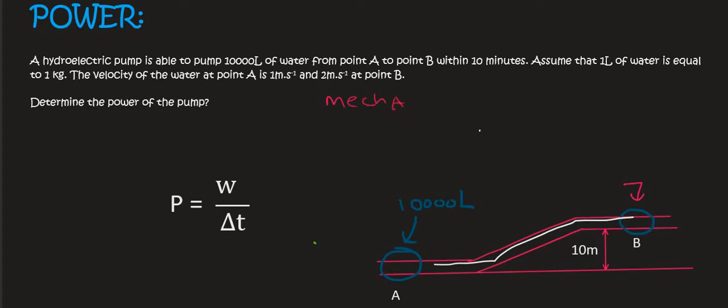So let's work out the mechanical energy at A, which is equal to the following. At A there is no height, and so the potential energy falls away, and so kinetic energy is a half mv squared. Now the mass they haven't given us, but they've told us that there's 10,000 liters and they said that assume that one liter of water is equal to one kilogram. Just a side note, that's actually a very accurate, it's almost perfect that assumption, because water has a density of one kilogram per meter cubed, and so that's a very good assumption.